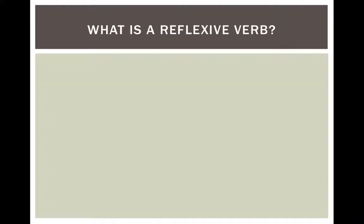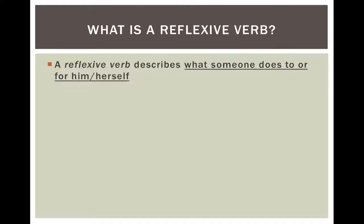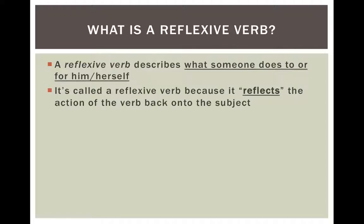So let's start off with figuring out what is a reflexive verb. A reflexive verb describes what someone does to or for him or herself. So the person acting in the sentence — the subject — is the same thing as the object of the sentence, the thing receiving the action. It's called a reflexive verb because it reflects the action of the verb back onto the subject, so the subject is the same as the object in that sentence.